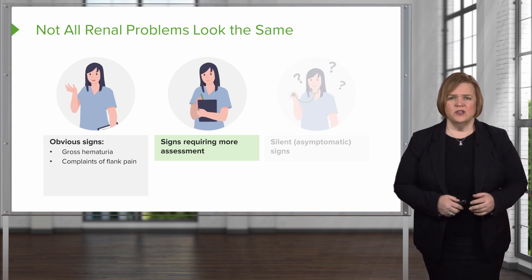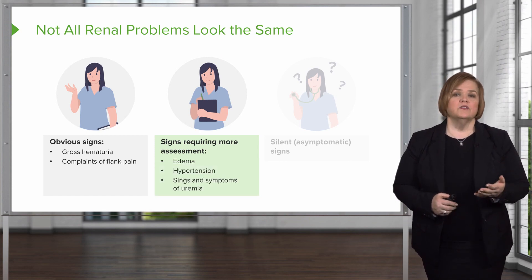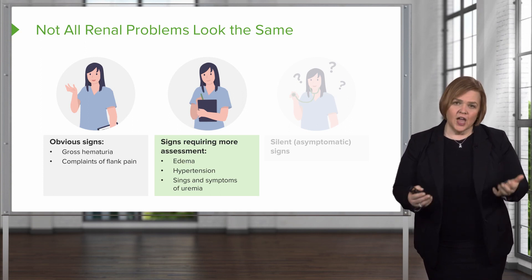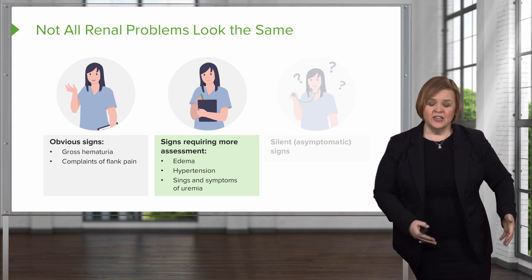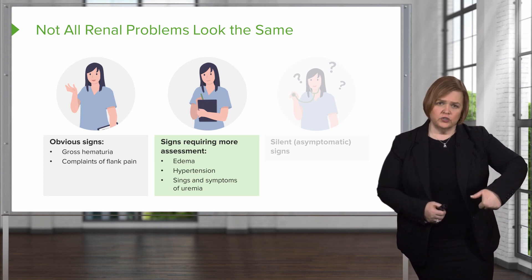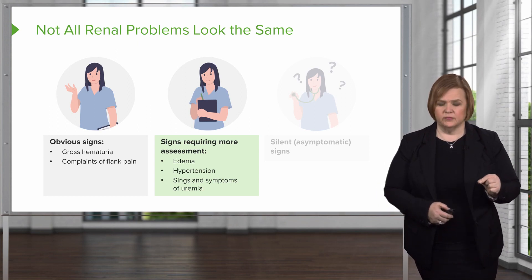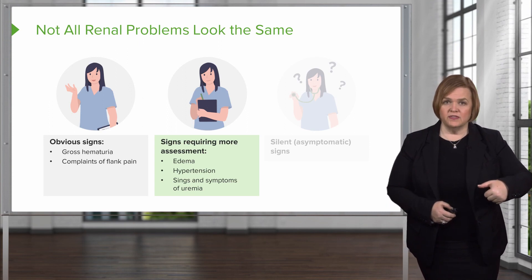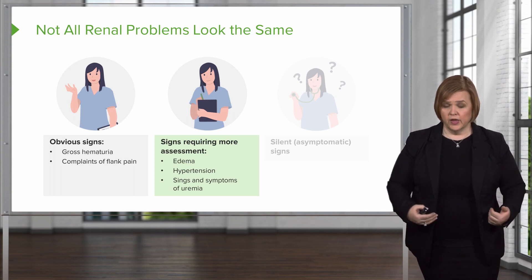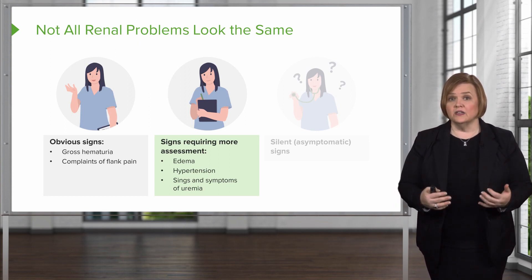The second category are signs that require a little more assessment to figure out if the kidneys are involved. Take edema, for example — edema is fluid in inappropriate spaces. If a patient's legs are swollen, too much fluid has leaked out into their tissues. If you push down on their shin bone with your thumb and there's still a divot left, that's called pitting edema. That could be a renal problem because they're not able to get rid of enough fluid, or it could be a cardiac problem, or a fluid overload problem — you need to do more assessment to find the cause.